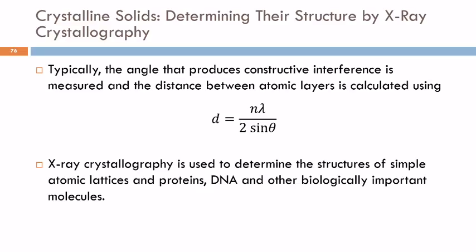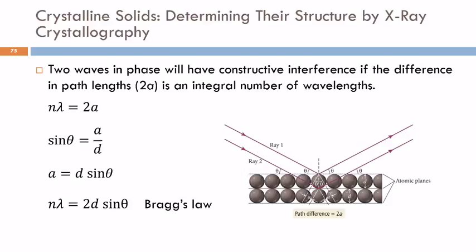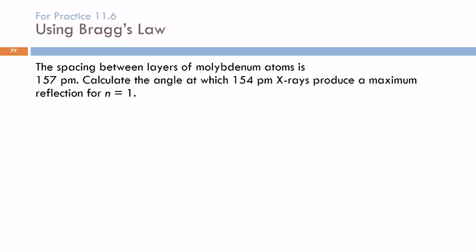So we're looking for the angle. So maybe let's just go back here and use Bragg's law: nλ = 2d sin θ. So nλ equals 2d sine of theta. Theta is the angle. And so that's what we're trying to find. So the sine of theta is going to equal nλ over 2d.